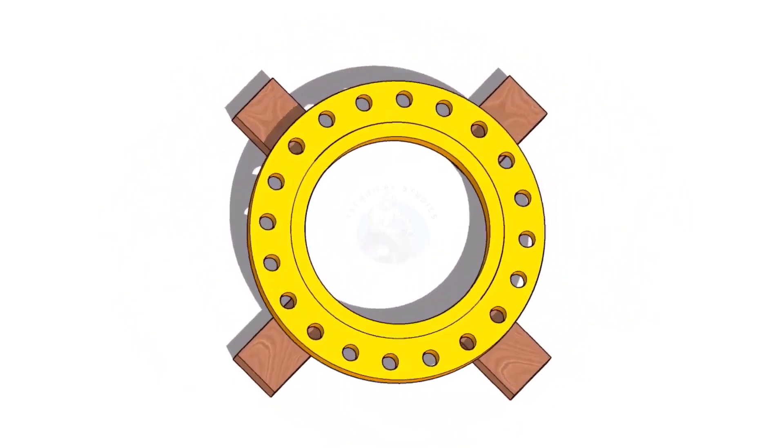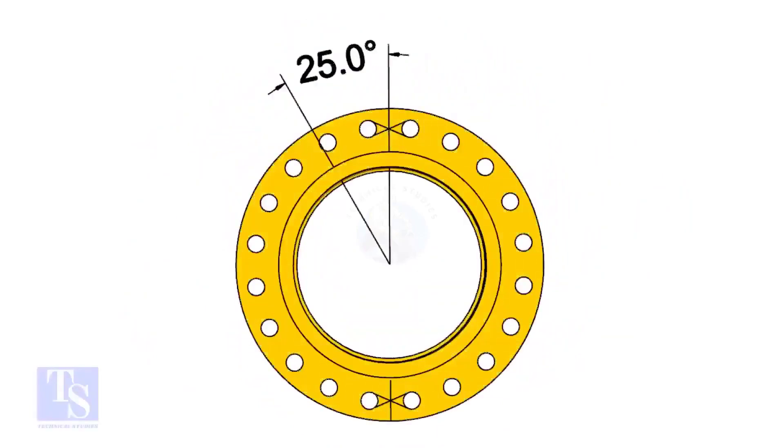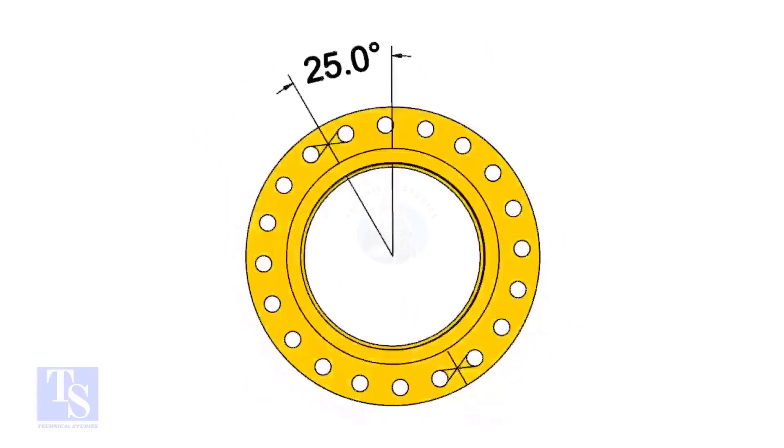The pipe and the flange size is 16 inch, and the flange will rotate 25 degrees anti-clockwise. Hope you all know the difference between clockwise and anti-clockwise rotation.